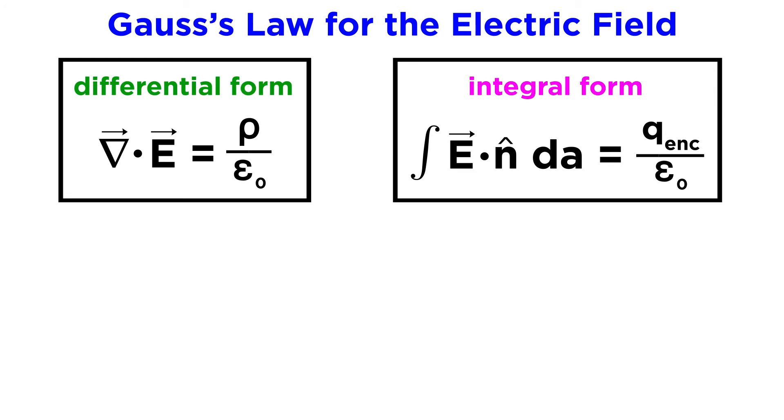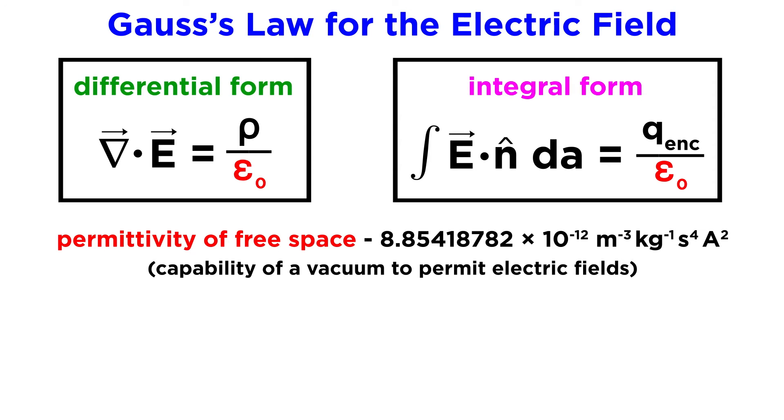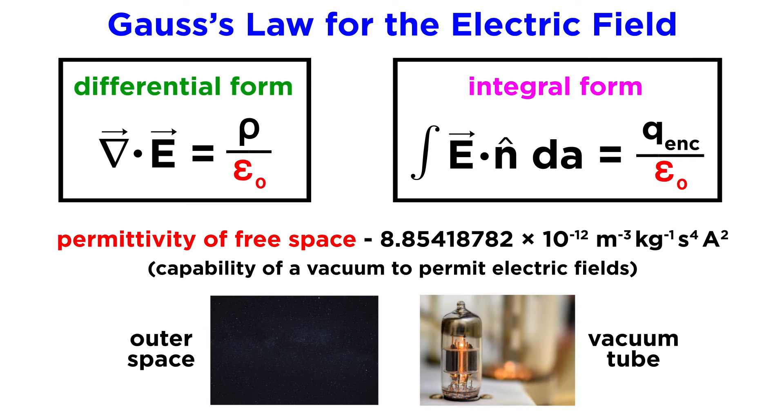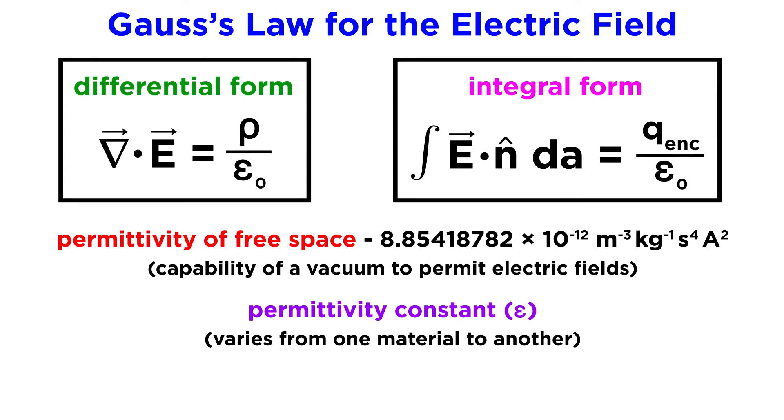Let's look at the two forms of this law again. In both forms there is the constant we described earlier, the permittivity of free space. This constant is only valid for situations where all currents, both bound and free, are accounted for. In a more approachable situation than the vast emptiness of deep space, or a large laboratory vacuum tube, this value is set by the material or materials that the electric field in question interacts with. In other words, the permittivity differs from one material to another, with free space acting as the baseline, represented by epsilon naught, whereas epsilon without the naught will represent a permittivity constant for a specific material.